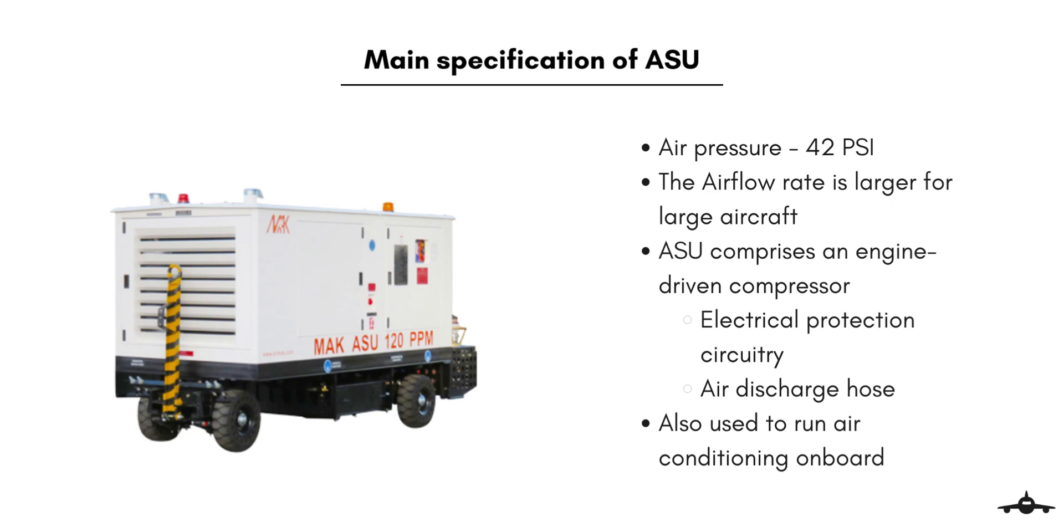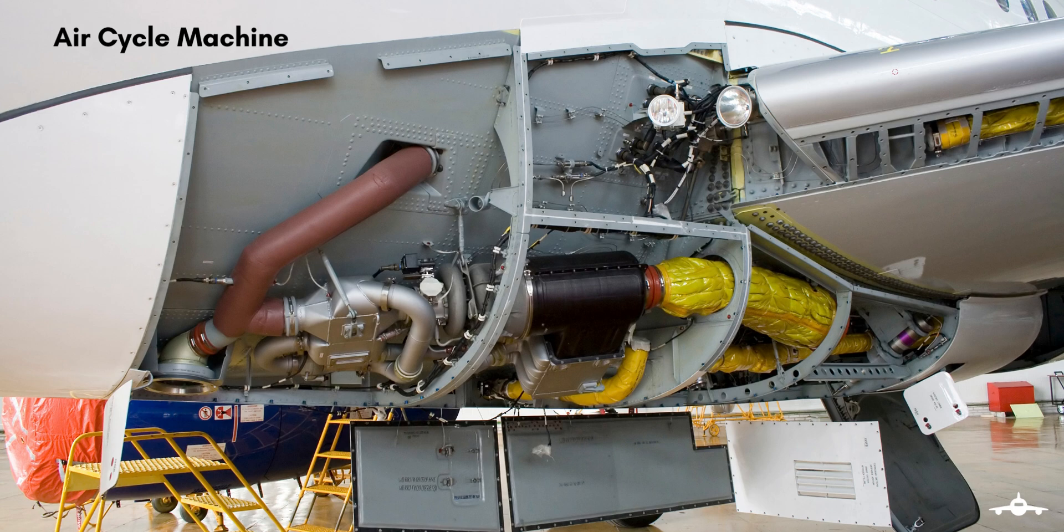An ASU can also be used to run the air conditioning unit on board the aircraft. Recall the air cycle machine discussed in the PCA lecture. Since ASU provides compressed air which is an alternative to bleed air, it can also be used to run the air conditioning unit on board the aircraft by supplying the compressed air to the air cycle machine.